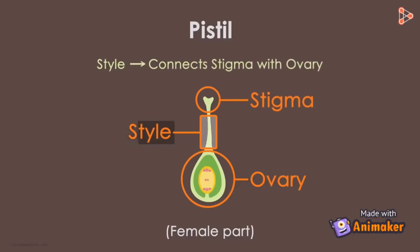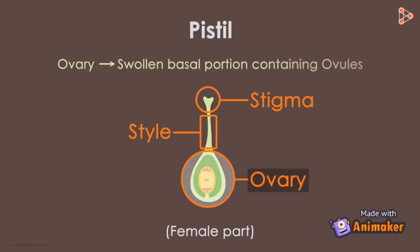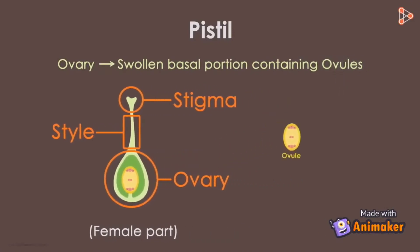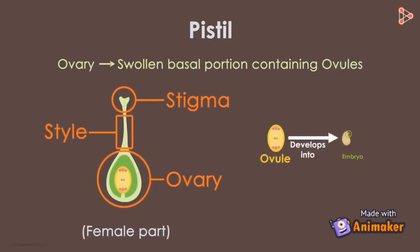What about the ovary? It is the swollen basal part of the pistil which contains the ovules. Ovules are the female gametes that get fertilized and form the embryo.